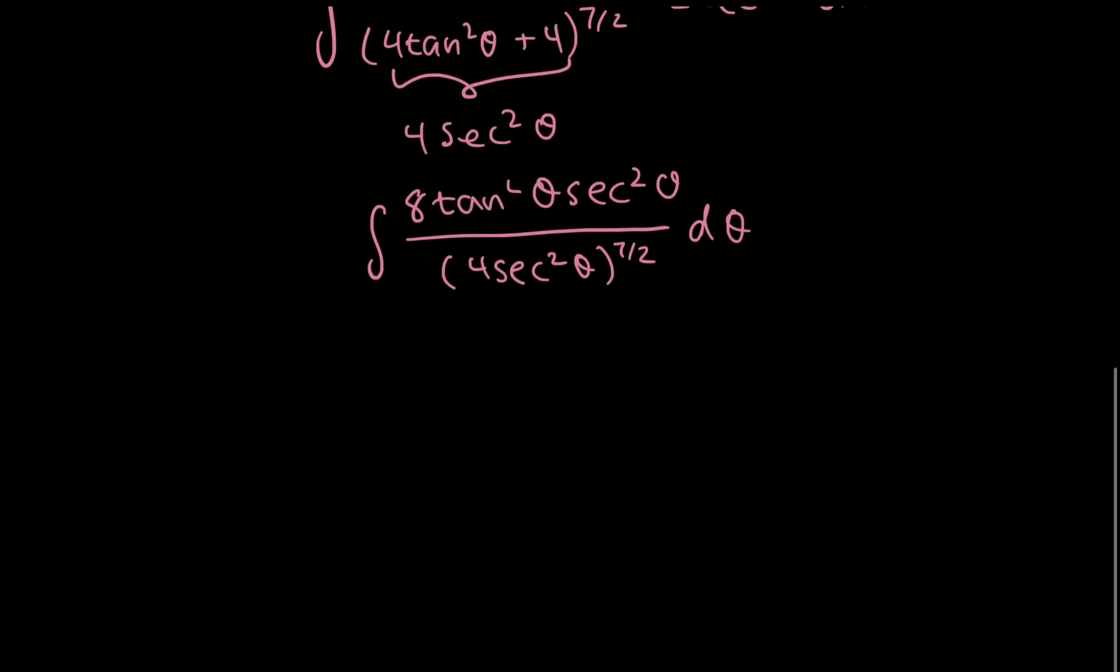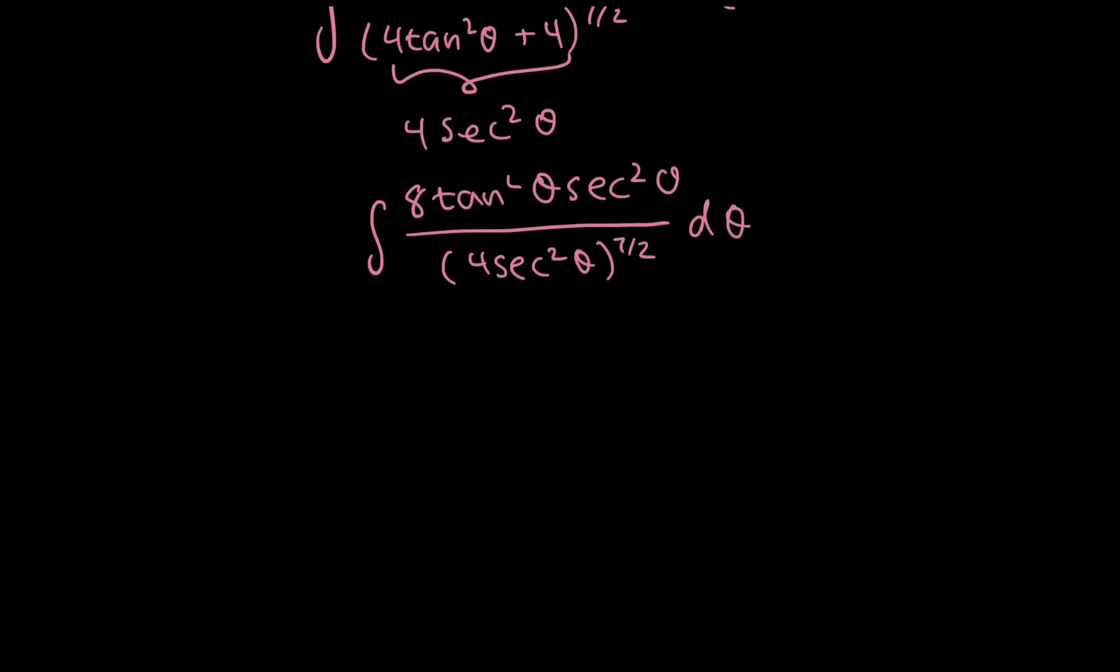And now, some more simplification. So I can take out my constants outside of the integral, so I have 8 over 4 to the power of 7 over 2. And then my integral,